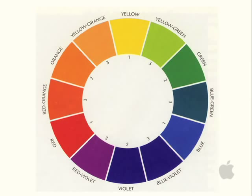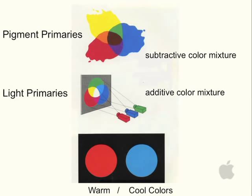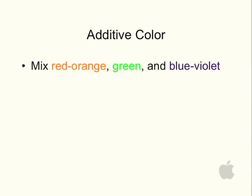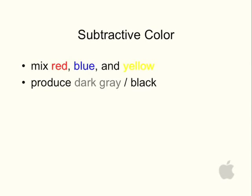Here's an example of a color wheel. We're going to be looking at this often as we continue to talk about the pigment primaries with primary colors, secondary colors, and complementary colors. Our primary colors are red, yellow, and blue. There are also light primaries, which are red, orange, green, and blue-violet, and these colors produce white light when combined — that's additive color mixture. Subtractive color mixture is when you mix red, blue, and yellow, and this produces a dark gray or black.